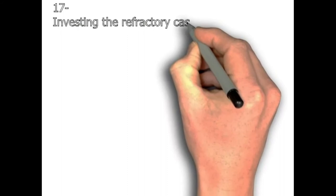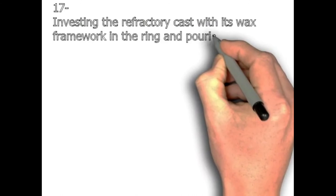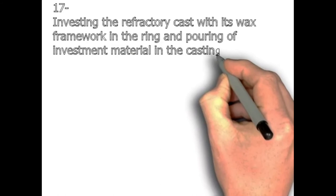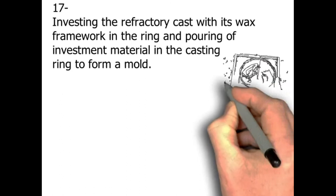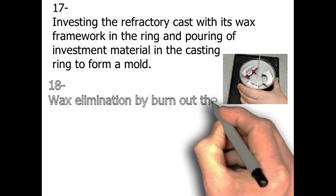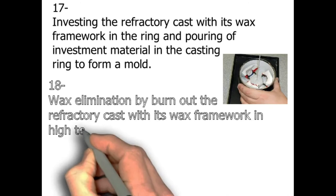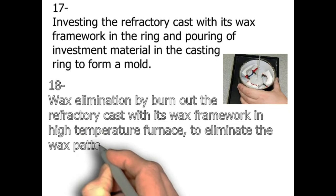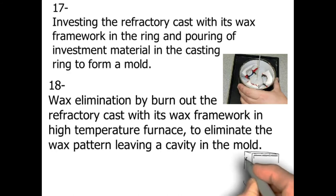Step number seventeen: investing the refractory cast with its wax framework in the ring and pouring of investment material in the casting ring to form a mold — that's a laboratory step. Step number eighteen: wax elimination by burning out the refractory cast with its wax framework in a high-temperature furnace to eliminate the wax pattern, leaving a cavity in the mold — that's a laboratory step.